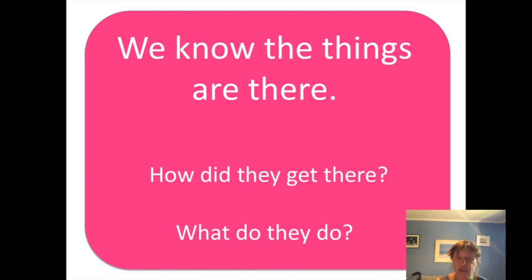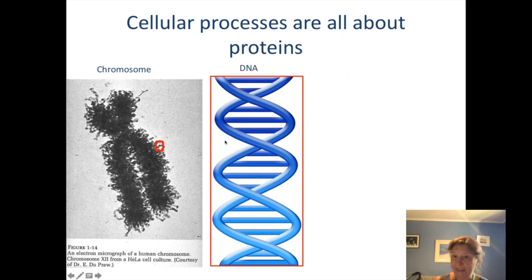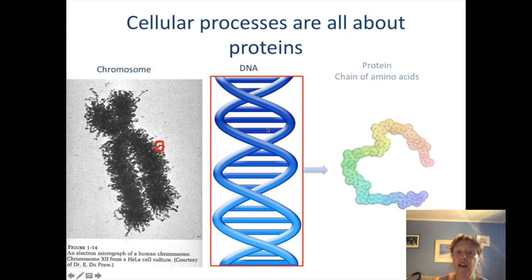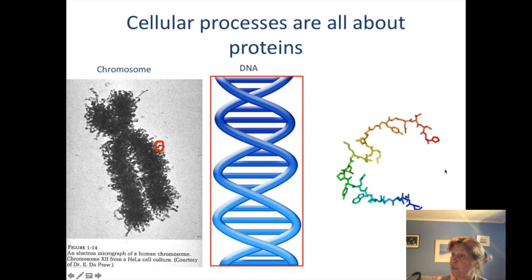In order to answer those questions, I want to introduce you to proteins. Cellular processes are all about proteins. This is a chromosome that produces your genetic material. DNA encodes all of your genes, which then get developed into a protein chain — a chain of amino acids. Each set of three bases encodes a particular amino acid. Our genes basically tell us what proteins are going to be produced and how those proteins are made up.